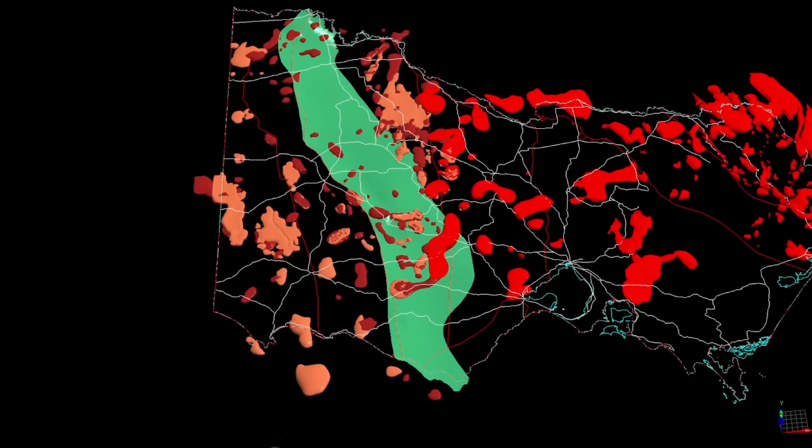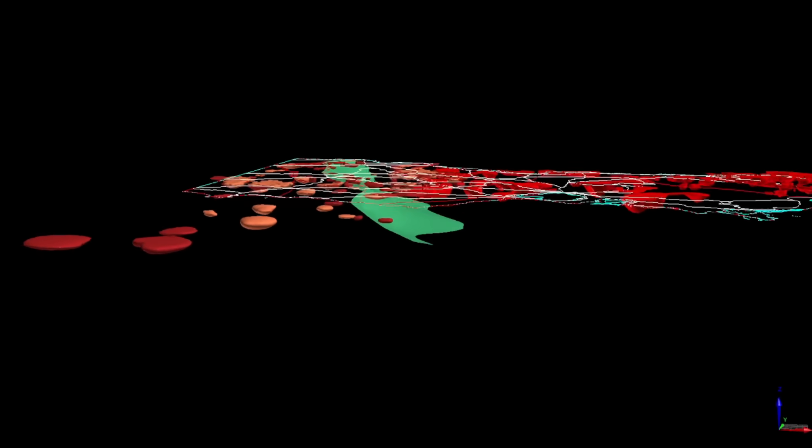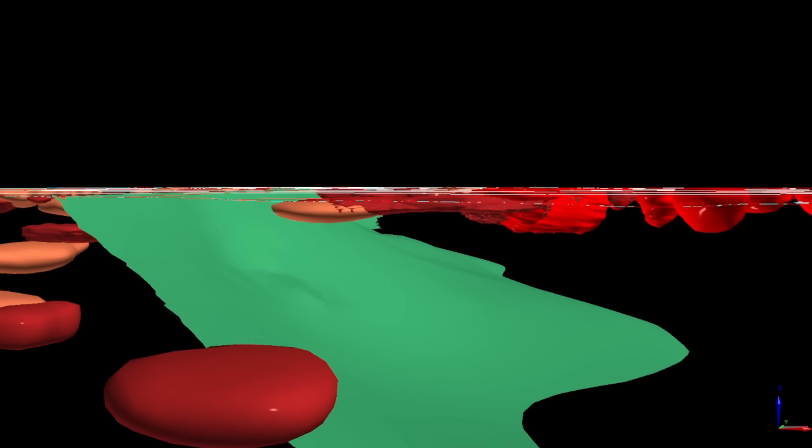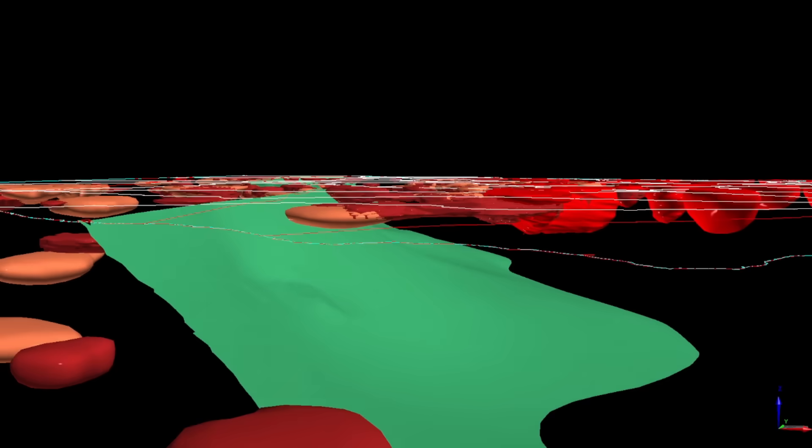A fault that once stitched western Victoria together became, much later, a conduit for molten rock, delivering it from the deep crust to the surface. And this isn't just a curiosity, it's a powerful lesson in how geology works.